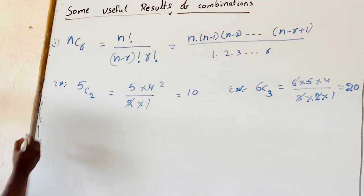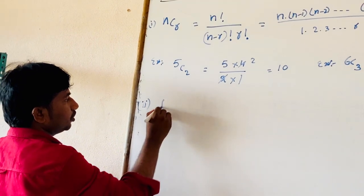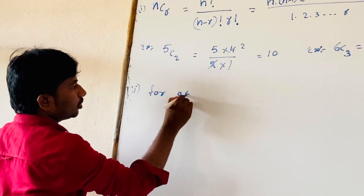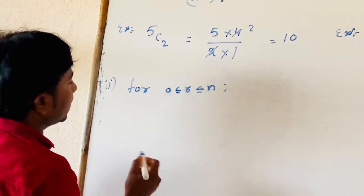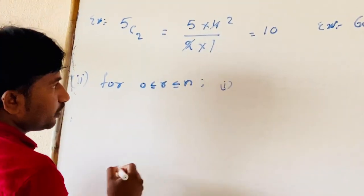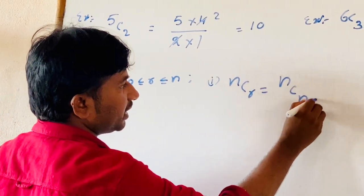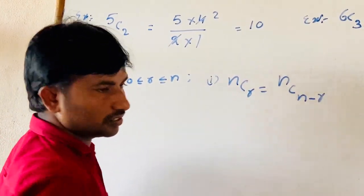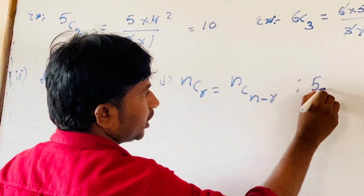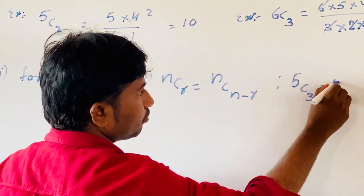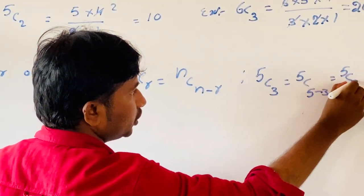The second useful formula: for 0 ≤ R ≤ N, NCR = NC(N−R). For example, 5C3 = 5C(5−3) = 5C2.